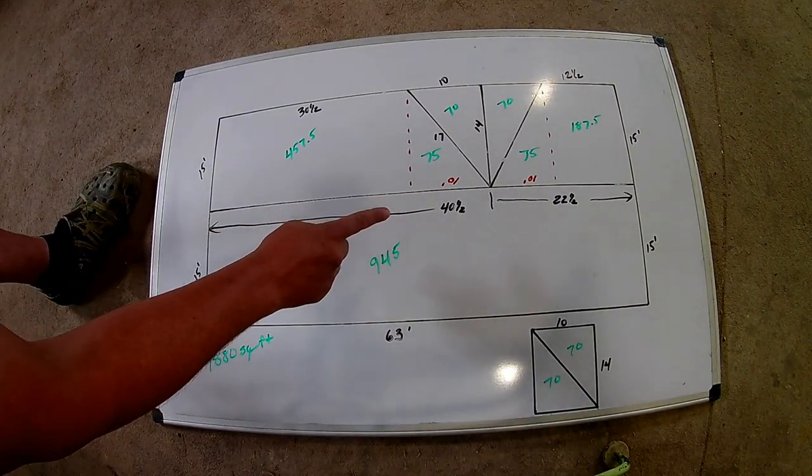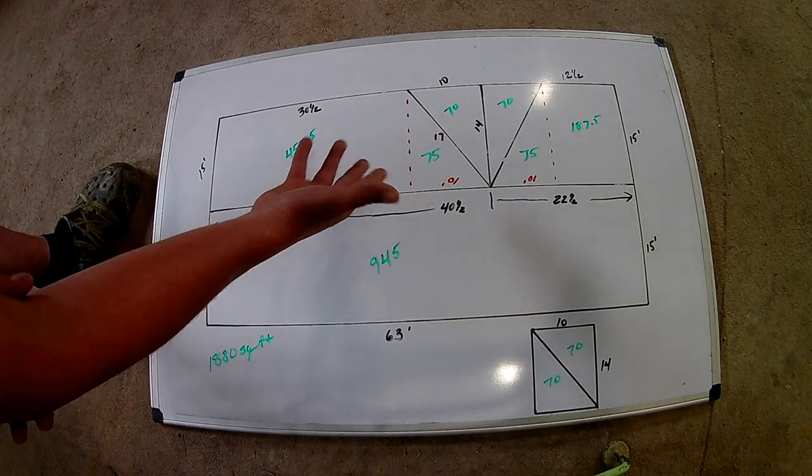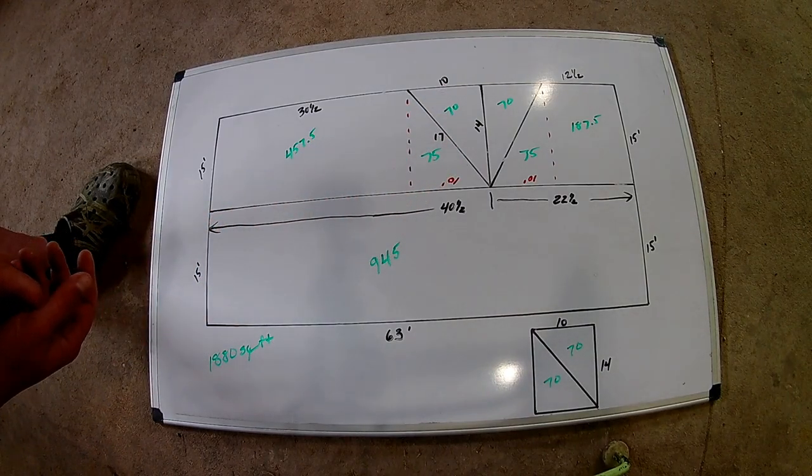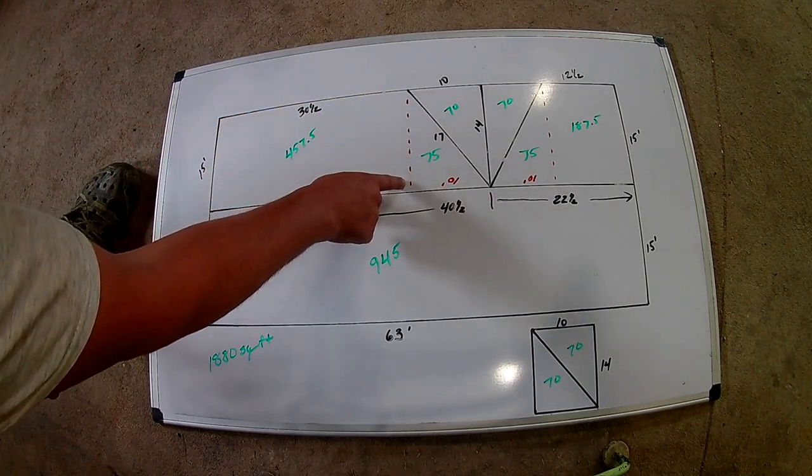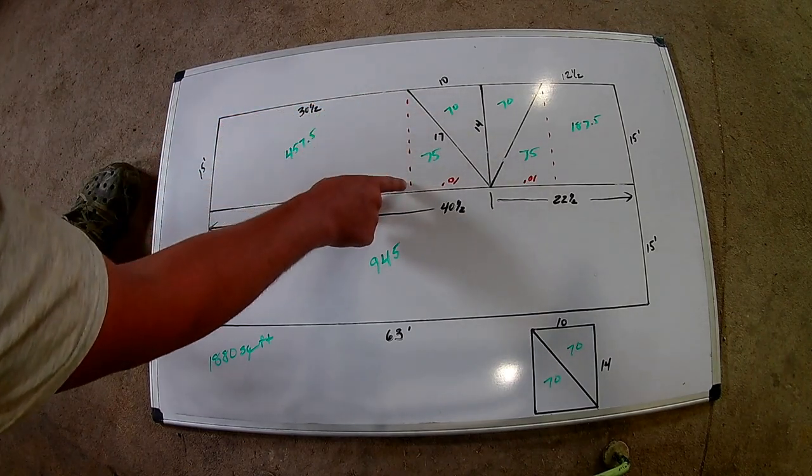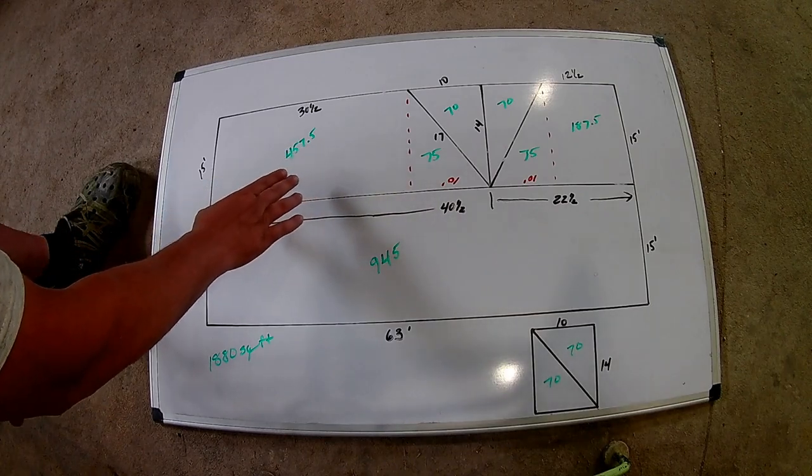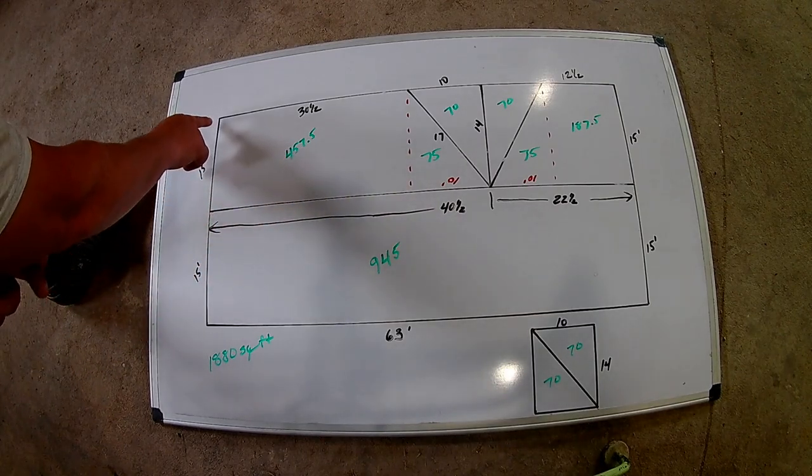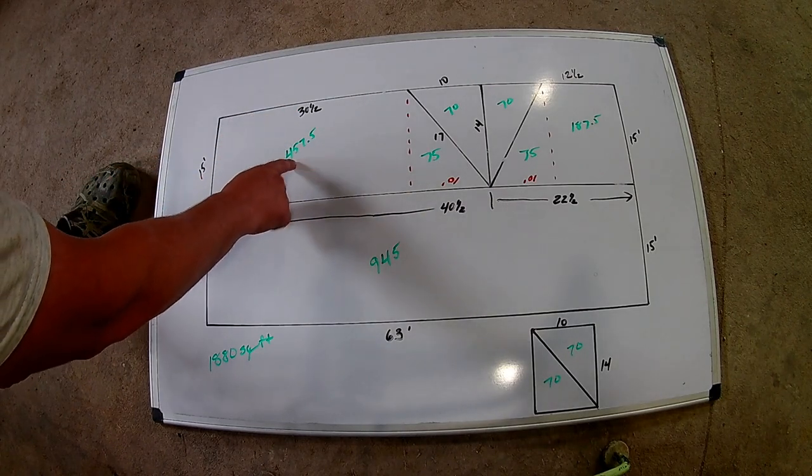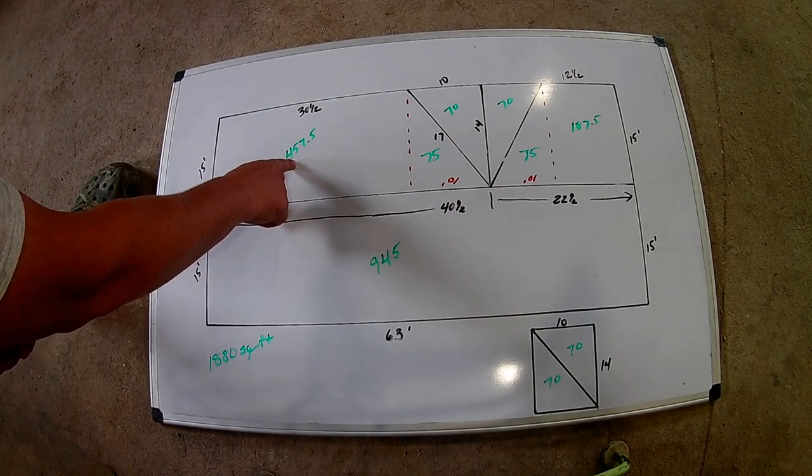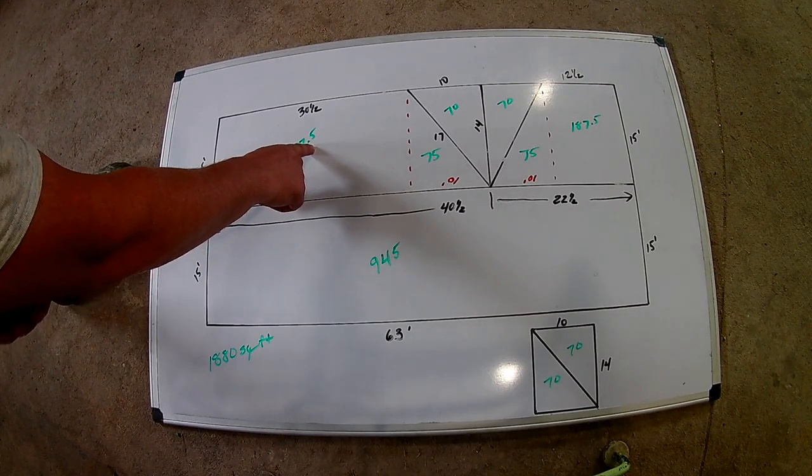Now on this side, it gets a little bit more complicated just because you have the triangles in here. So what I've done is I've drawn these red lines here to just mark off the straight portion of this roof. So we know that it was 15 feet by 30 and a half. I'm going to multiply 15 times 30 and a half. We have 457.5 square feet.